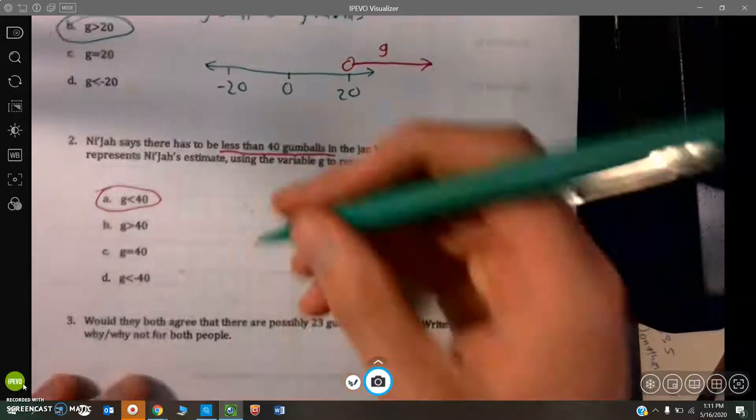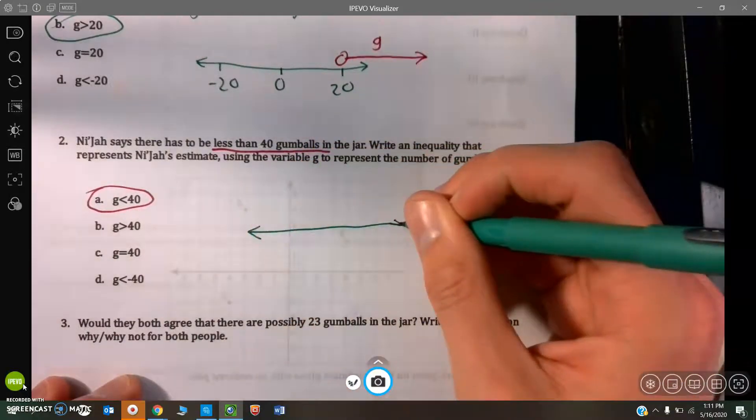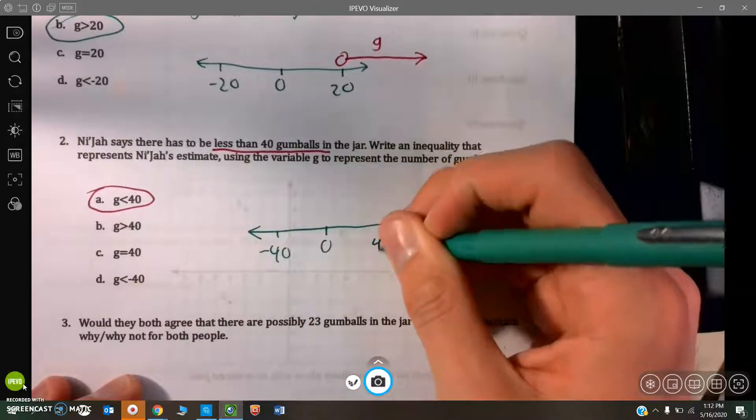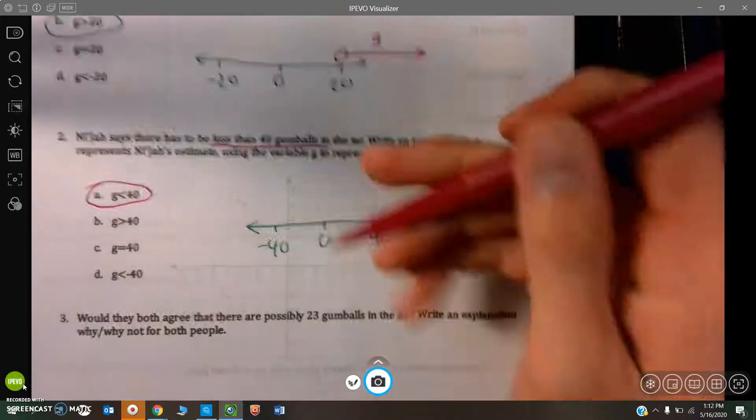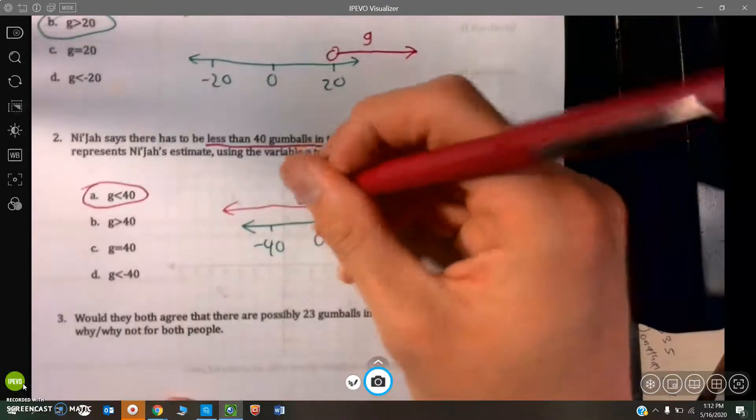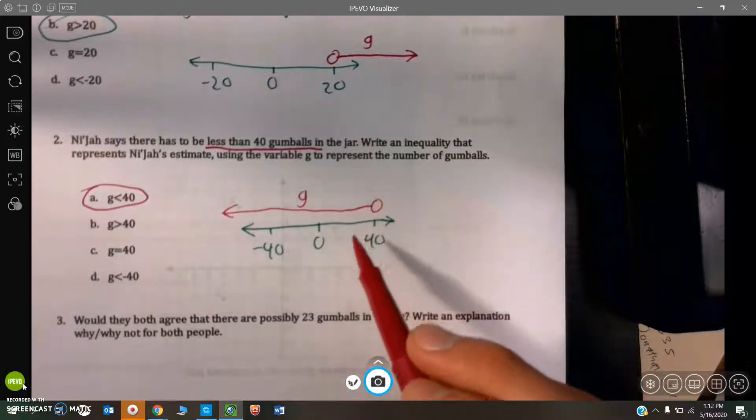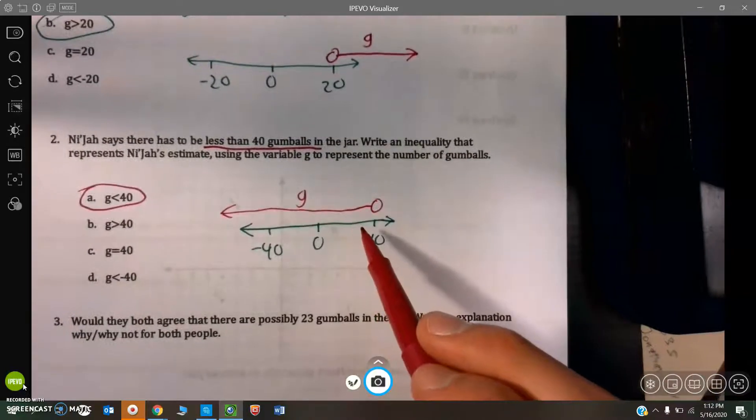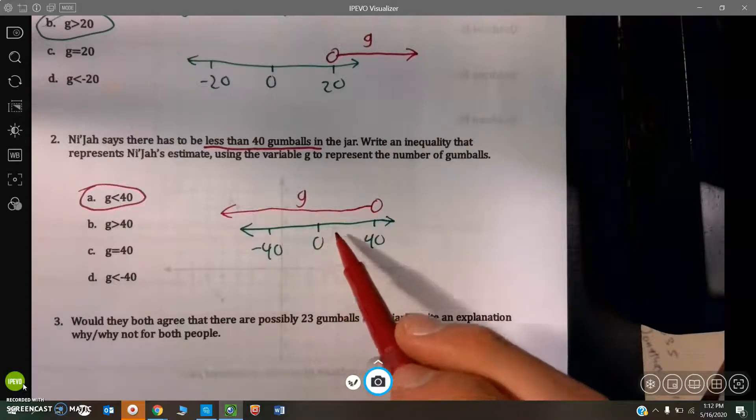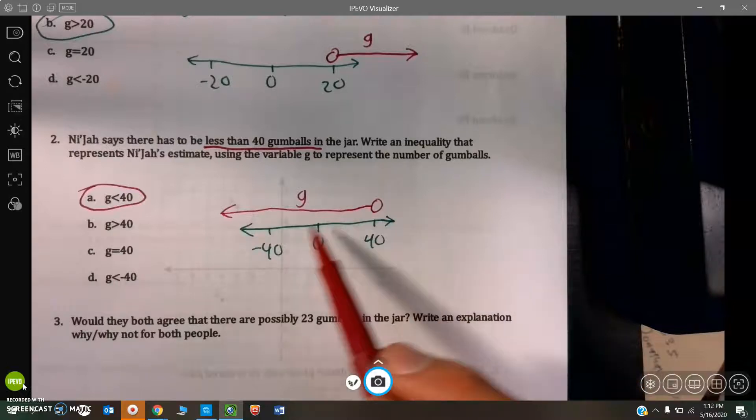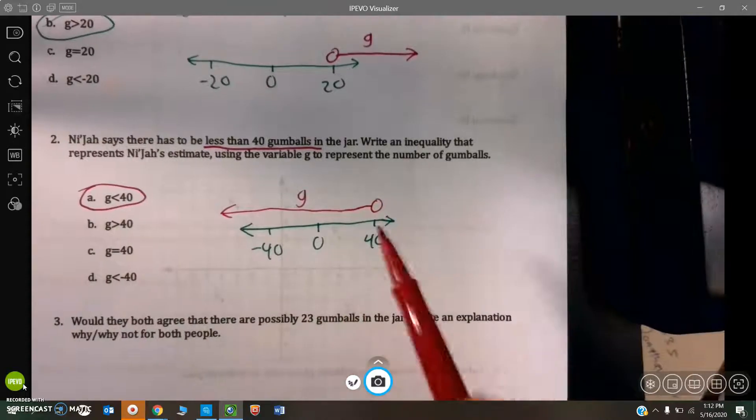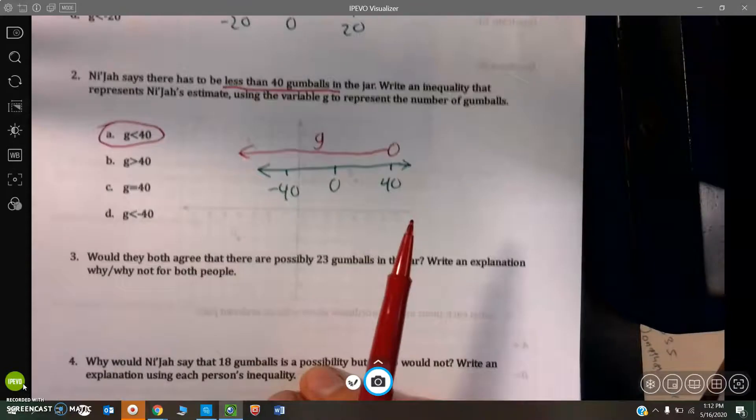Once again, if we had something here, 0, I'll put negative 40, and 40 over here. She is saying that it needs to be some amount less than 40. According to Niza, it could be 35 gumballs. It could be 20 gumballs. It could be one gumball. Something less than 40. This technically goes into the negatives as well, based on that inequality, but that doesn't really make sense in this context, because there's really no such thing as negative gumballs.